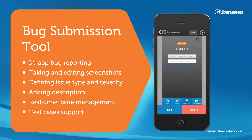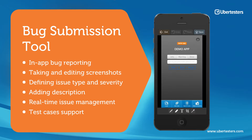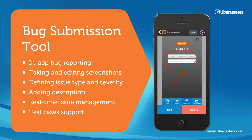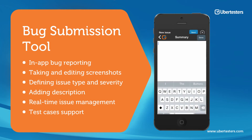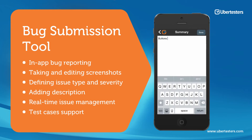Once you see the screenshot, tap on the edit button and start editing the screenshot. Once done, click on the save button to save the changes and move to the next screen to fill out the summary, description, issue type, and severity details.